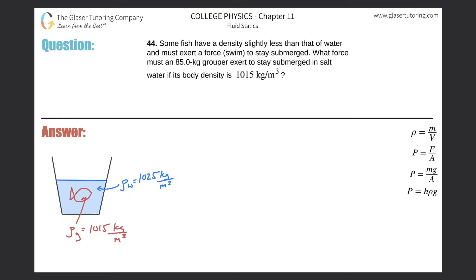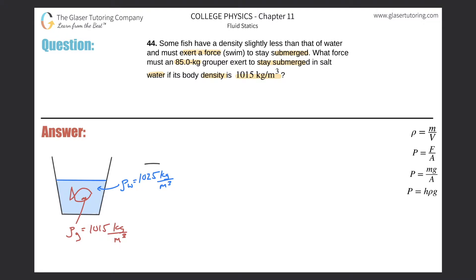Problem number 44: some fish have a density slightly less than that of water and must exert a force to stay submerged. What force must an 85-kilogram grouper exert to stay submerged in salt water if its body density is 1015 kg/m³? The density of salt water is 1025 kg/m³. Since the fish is less dense than the water, it cannot stay submerged without some additional downward force.